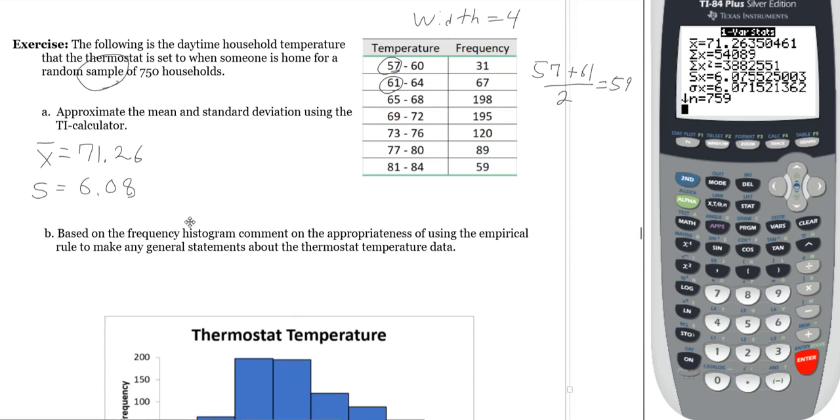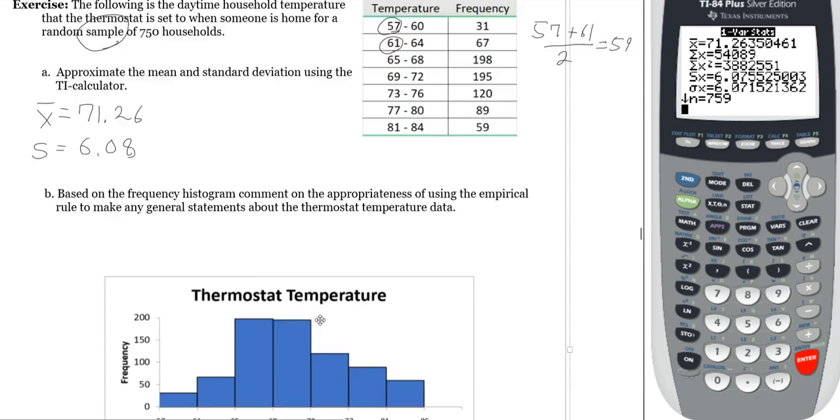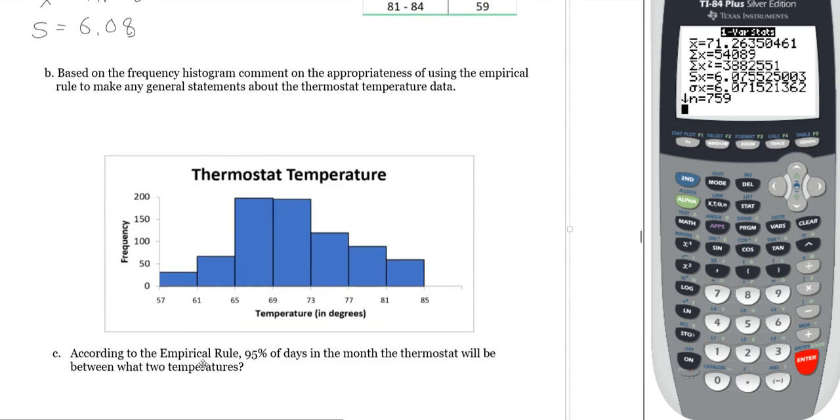Now, this data has already been graphed for us here. We have this frequency histogram. Based on the histogram, we want to comment on the appropriateness of using the empirical rule to make any general statements about the thermostat temperature data. So, this is kind of relating to the previous section, but also this section.